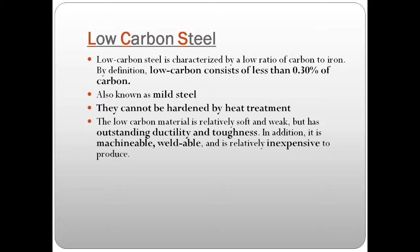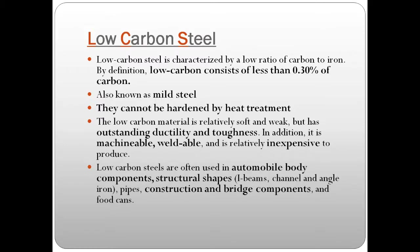As we add carbon, steel gets harder, but this hardness comes with a demerit: it is easily prone to cracking when we attempt to weld it. So as we move towards medium carbon and higher carbon steels, weldability decreases. Low carbon steels are often used in automobile body components. They are also known as structural steels, used in structural shapes such as I-beams, channels, and angles. They are also used in construction, some bridge components, pipes, and food cans.